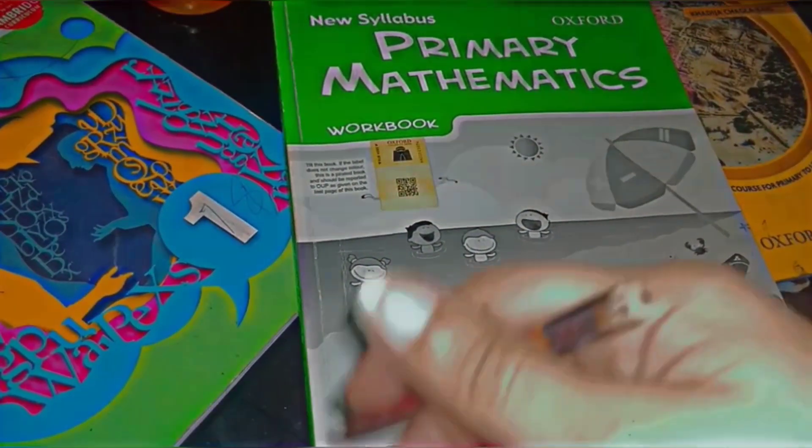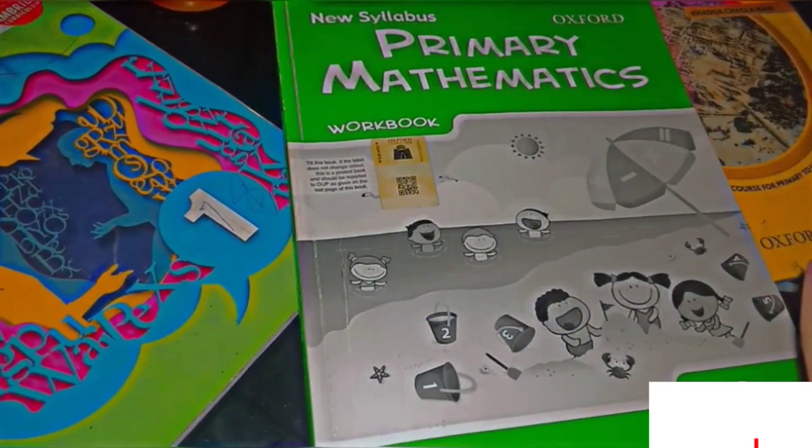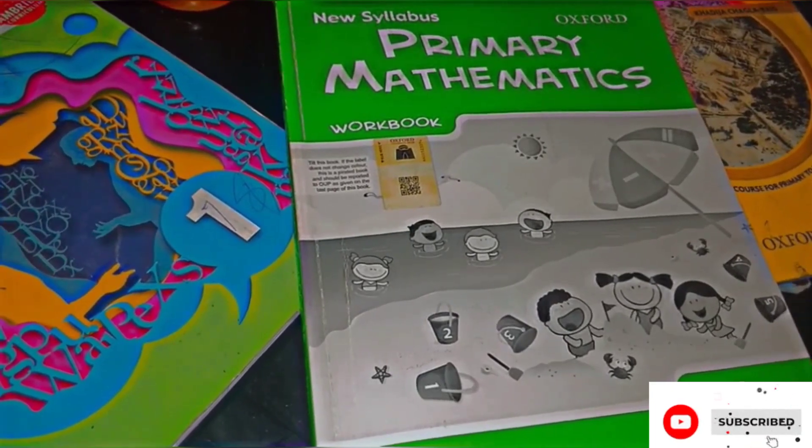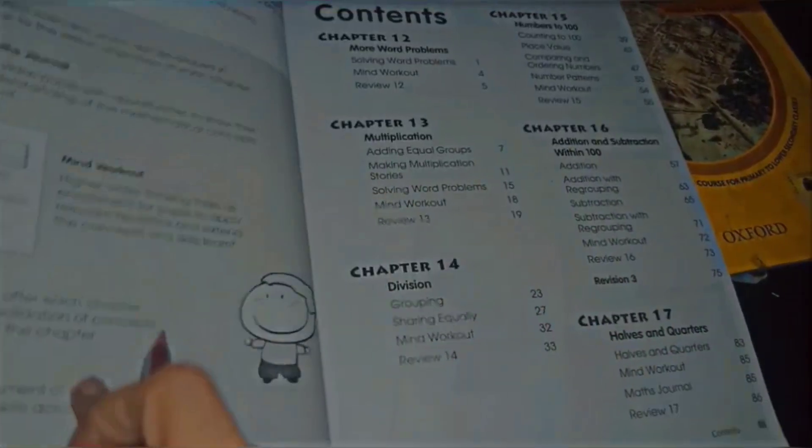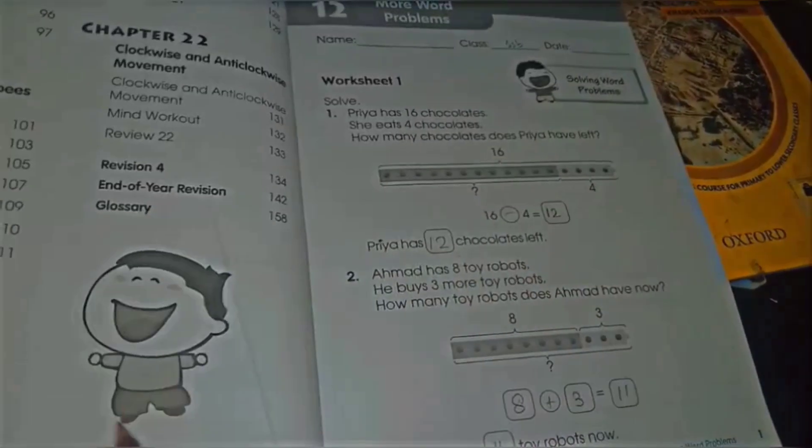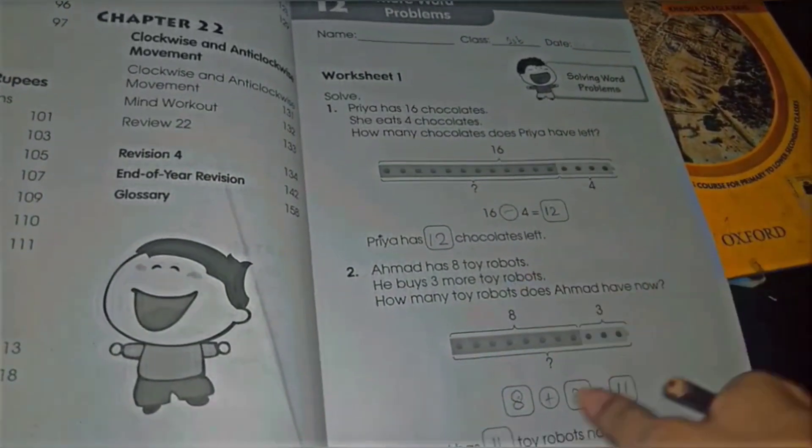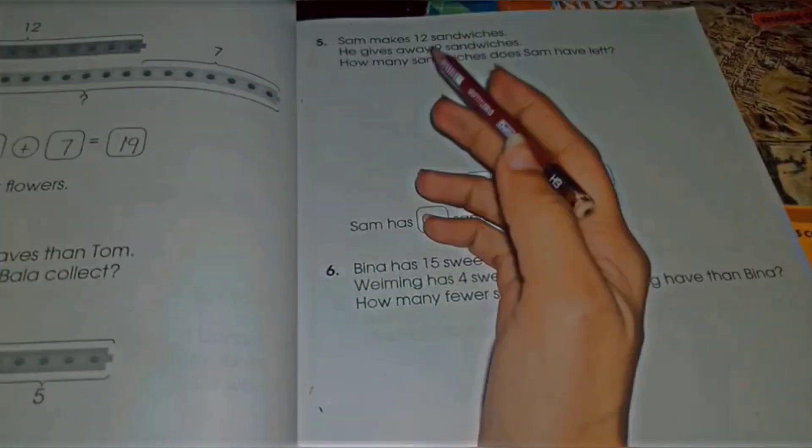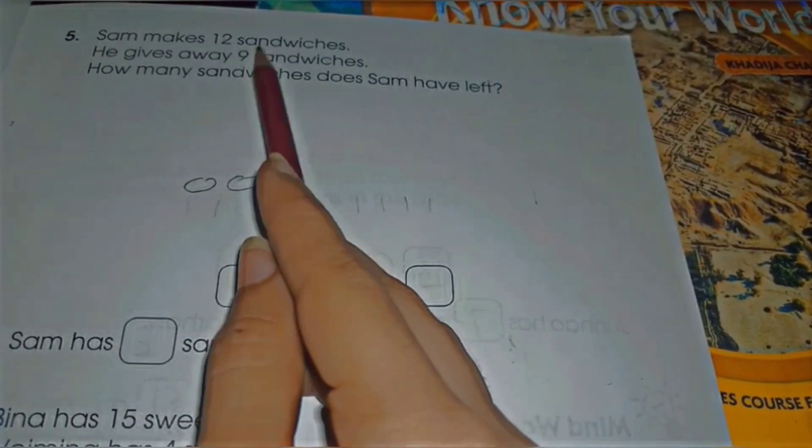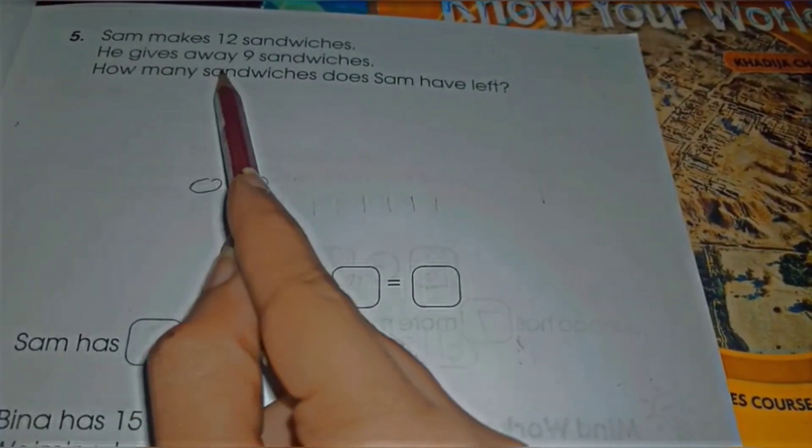Assalamualaikum everyone, welcome to my new video. We were discussing chapter 12 and we have already done questions 1, 2, 3, 4. Now let's come to the next question, which is: Sam makes 12 sandwiches, he gives away 9 sandwiches.